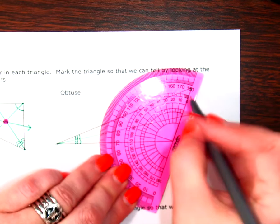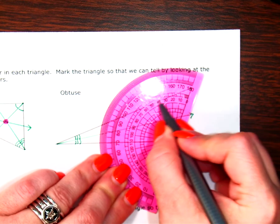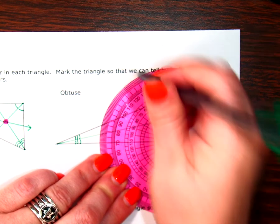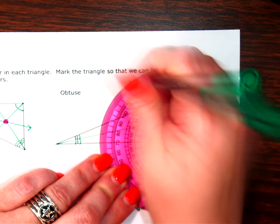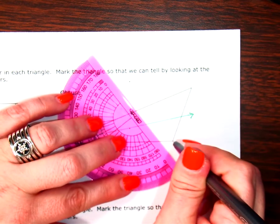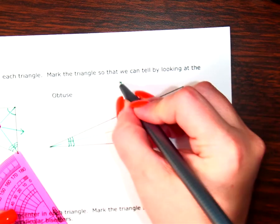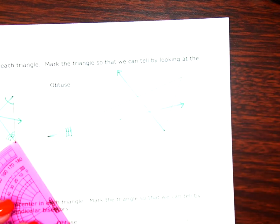So half of 110 is going to be 55. So from this 0, I want to open up to 55, which is going to be between the 50 and the 60. So it's going to be right here. Okay.